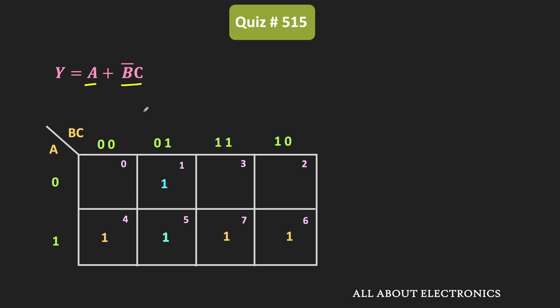By looking at this K-map, we can say that function Y contains five min terms. In canonical SOP form, it can be represented as the summation of min terms 1, 4, 5, 6, and 7. Similarly, for canonical POS form, it contains the max terms 0, 2, and 3.